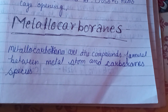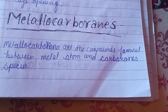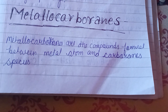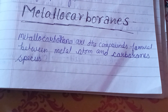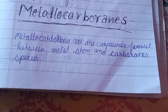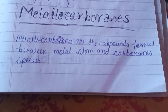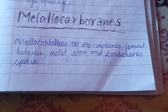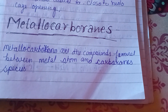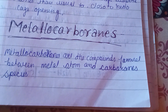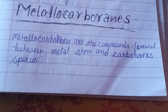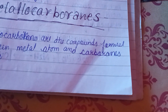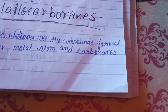Hello everyone. Today in this video we're going to discuss about metallocarboranes. Metallocarboranes are compounds formed between metal atoms and carborane species. In our previous video we already read about the carboranes — for this you can check the playlist.